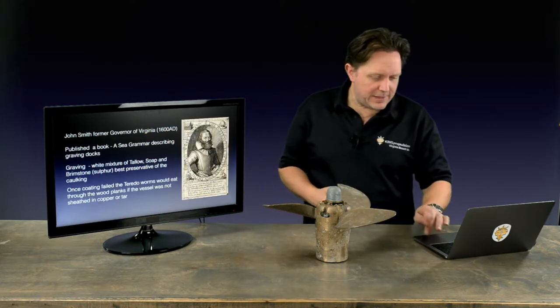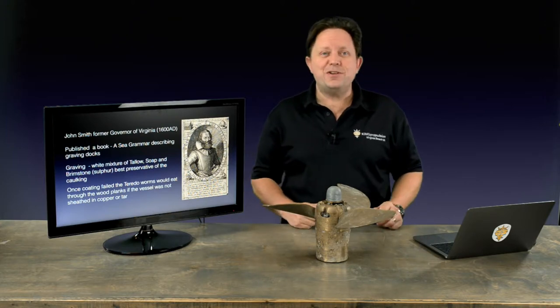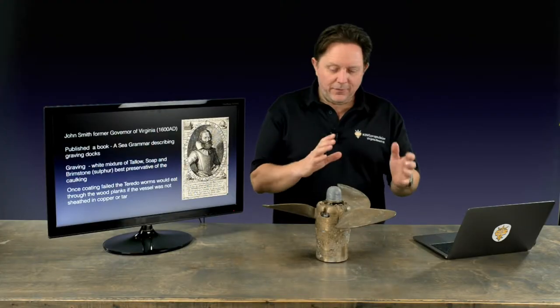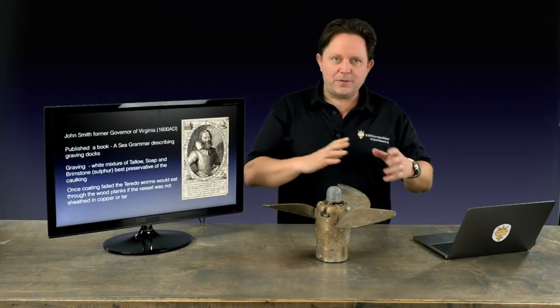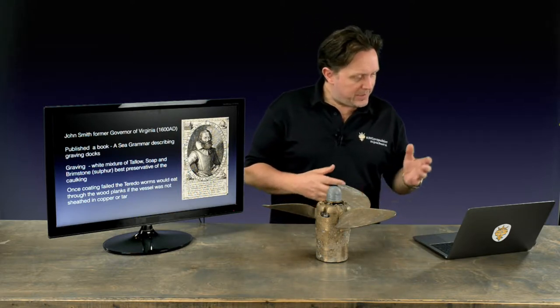But let's look at a little bit of the history there. John Smith is a governor of actually Virginia, where we are, in 1600. He was actually an admiral of the British Navy. He published a book called Sea Grammar, and he was describing graving docks. Now, graving, it's kind of gone out of fashion, obviously, as paints and other resins have come in to take its place.